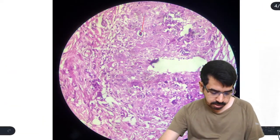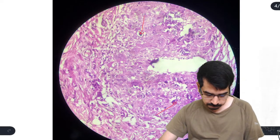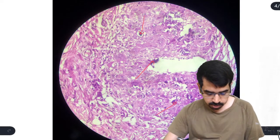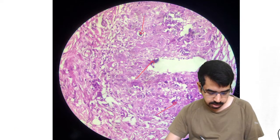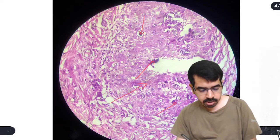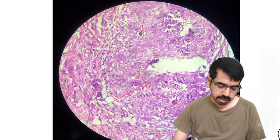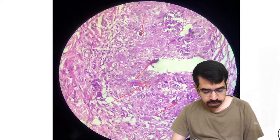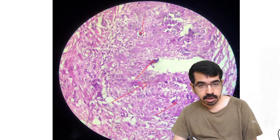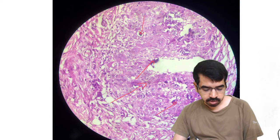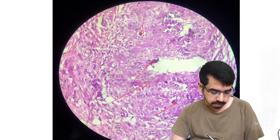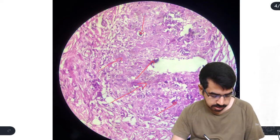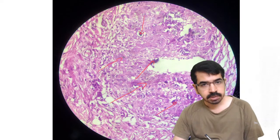Some of these basophilic deposits are surrounded by cells with abundant eosinophilic cytoplasm and distinct cell borders — these cells are histiocytes, epithelioid histiocytes. We can also see some foreign body giant cells with many nuclei scattered in the cytoplasm.